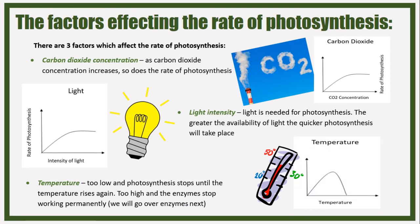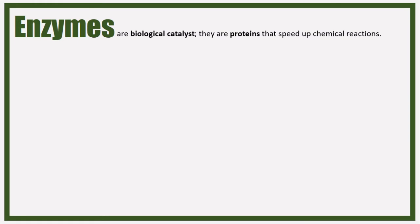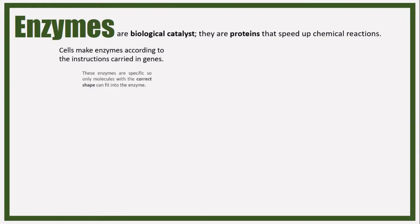Moving on to enzymes. Enzymes are biological catalysts - they are proteins that speed up chemical reactions. Cells make enzymes according to the instructions carried in genes. Enzymes are specific, so only molecules with the correct shape can fit into the enzyme. This is called the lock and key model.